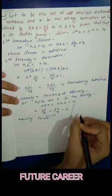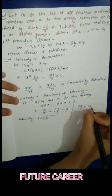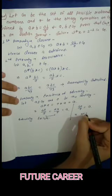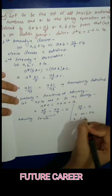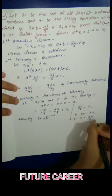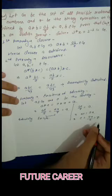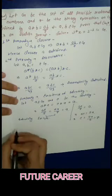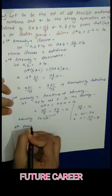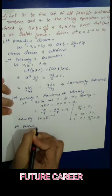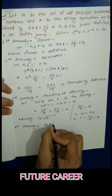To find the identity: ae/7 = a, so ae = 7a, so e = 7. Our identity element is e = 7.